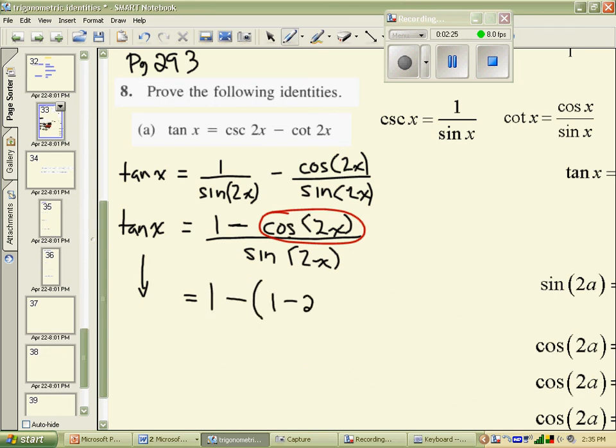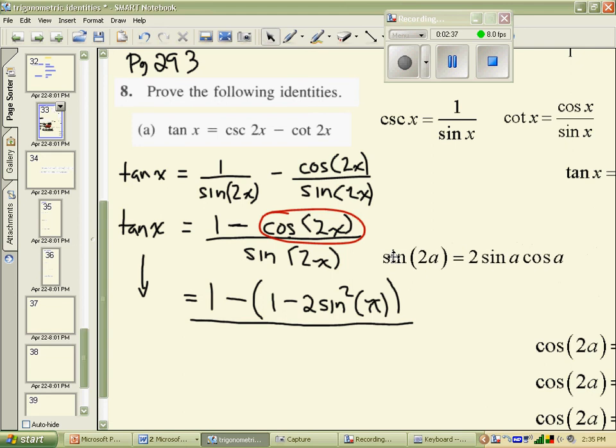We will divide that by sine of 2x, but now, before I write sine of 2x, I think I'd like to rewrite what sine of 2x is. You can always write sine of twice any angle as 2 times the sine and the cos of the single angle. So we'll rewrite that as 2 sine of x times the cosine of x.